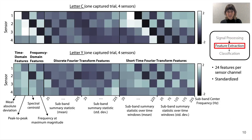We extract 96 time domain, frequency domain, and spectrotemporal features. Examples include peak-to-peak amplitude, spectral centroid, and summary statistics across bandwidths after computing discrete or short-time Fourier transforms.